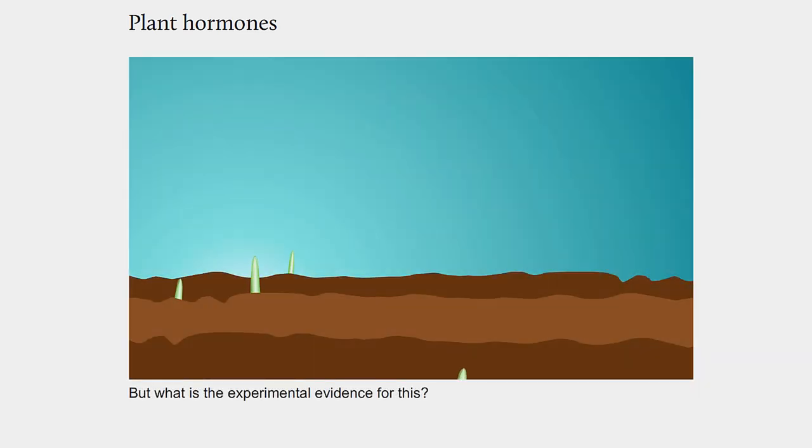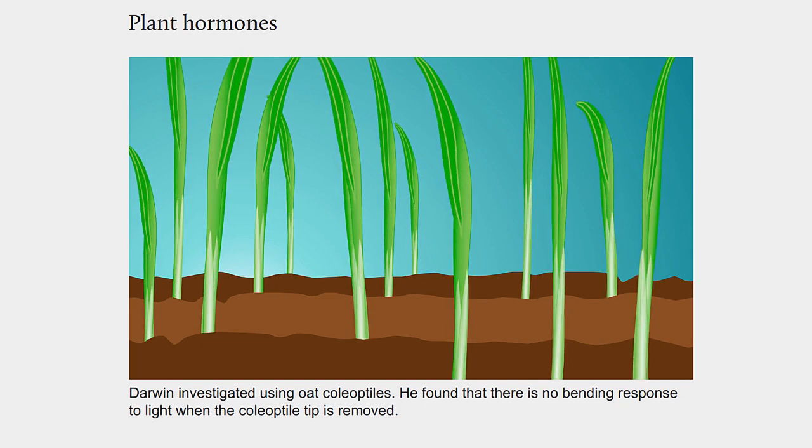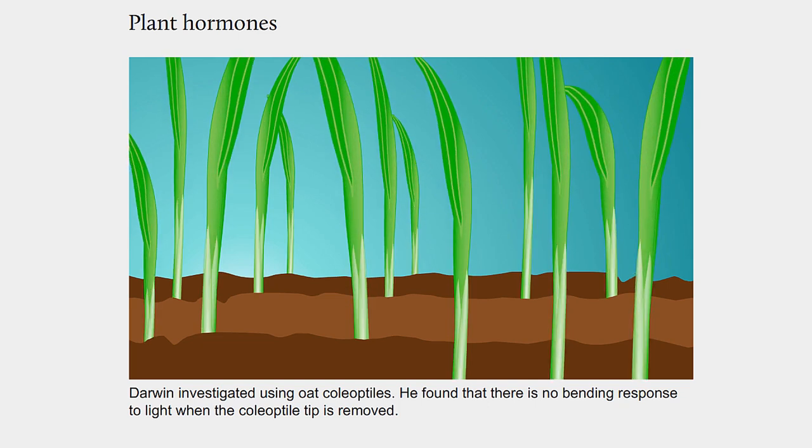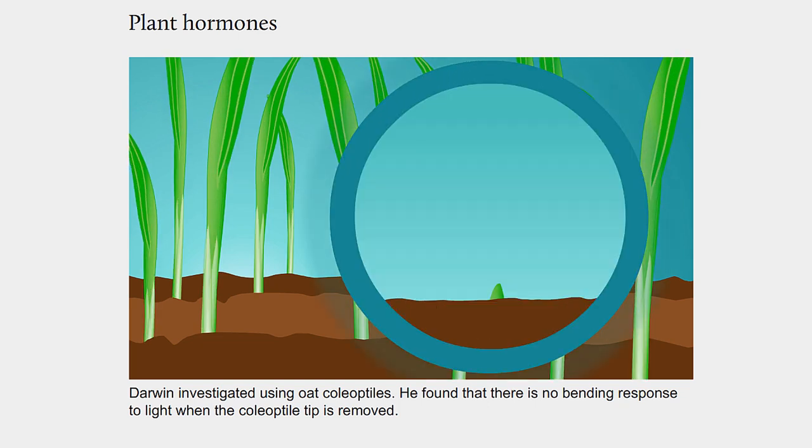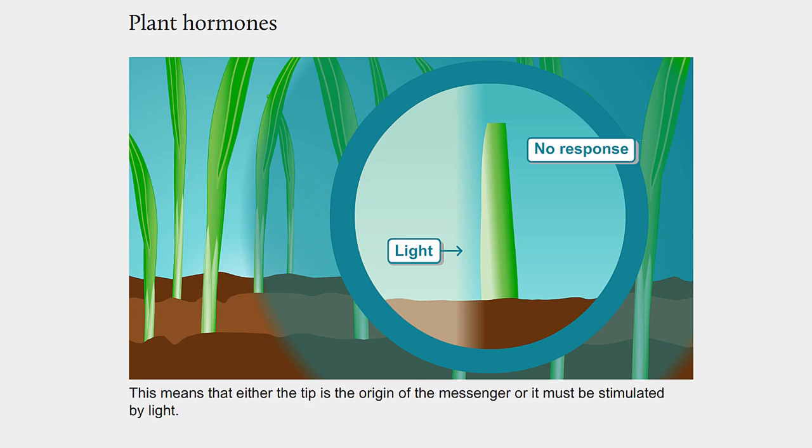But what is the experimental evidence for this? Darwin investigated using oat coleoptiles. He found that there is no bending response to light when the coleoptile tip is removed. This means that either the tip is the origin of the messenger, or it must be stimulated by light.